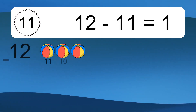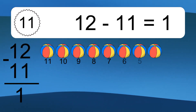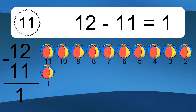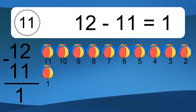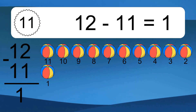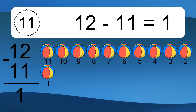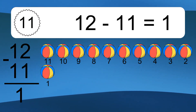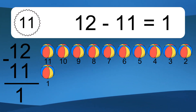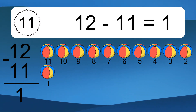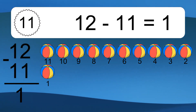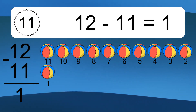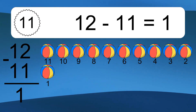12 minus 11 equals what? 12 minus 11 equals 1. Let's count it. 11, 10, 9, 8, 7, 6, 5, 4, 3, 2, 1.